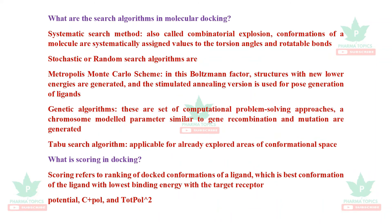What are the search algorithms in molecular docking? Systematic search method, also called combinatorial explosion: confirmations of a molecule are systematically assigned values to torsional angles and rotatable bonds. Stochastic or random search algorithms — the Metropolis Monte Carlo scheme — generates structures with new lower energies using a Boltzmann factor, and the simulated annealing version is used for post generation of ligands.